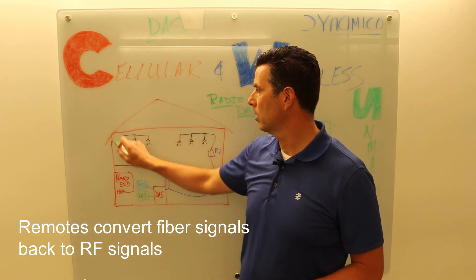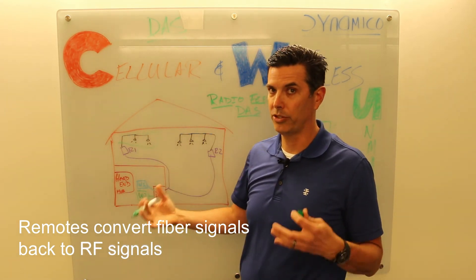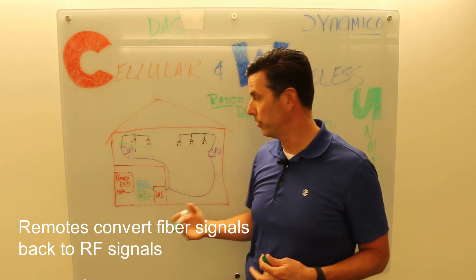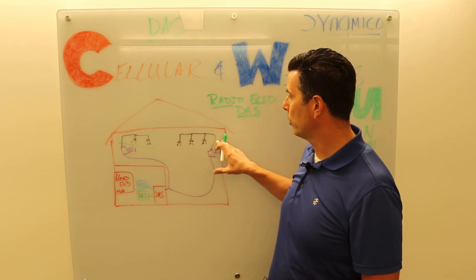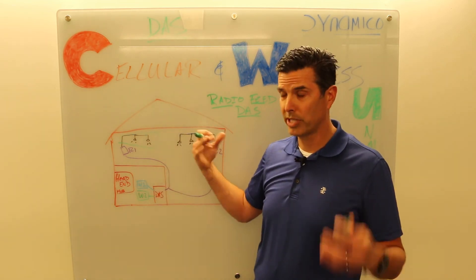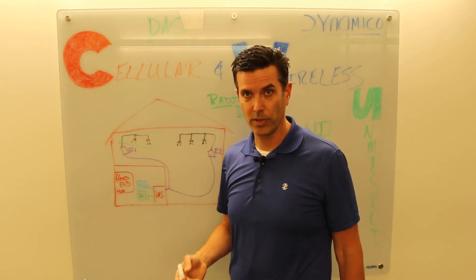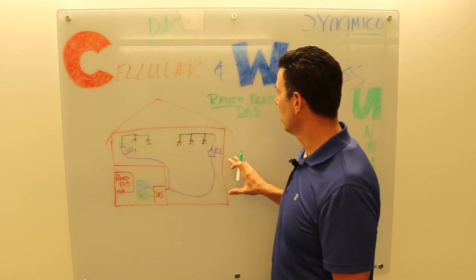From there you plug in a coaxial distribution system here and the amount of antennas varies. It can be one antenna, it can be five antennas, it's just based upon your link budget and your design. And then those remotes feed that coaxial system of passives, splitters, couplers, tappers, and then they feed the service antennas which then provides you that service link to your mobile device.